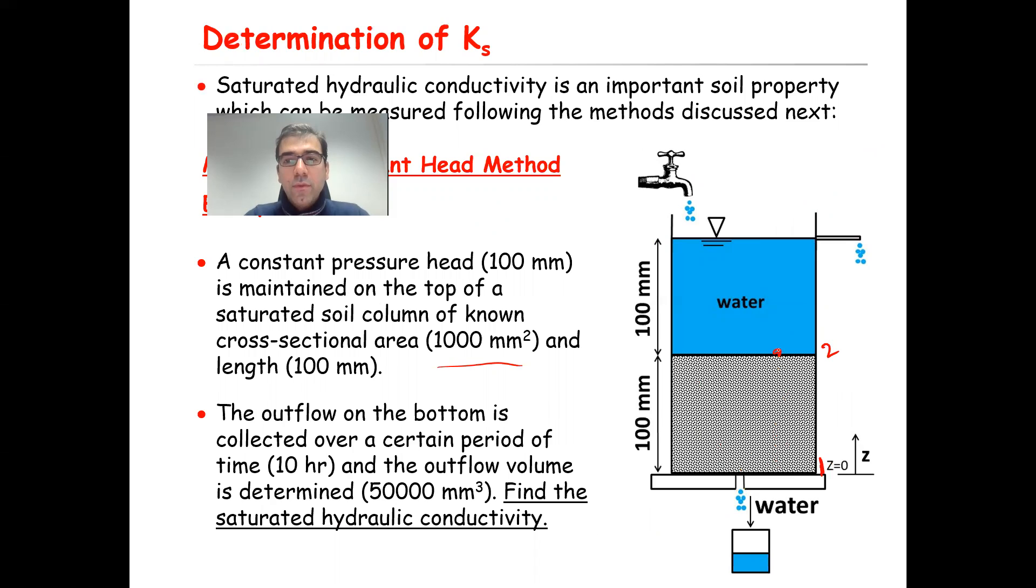The head has two components: gravitational head and hydrostatic pressure. In terms of gravitational head, that is the vertical distance between point of interest and the reference level. In this particular case, that is equal to 100, so that will be 100. H2 will be equal to 100, that is gravitational head, plus hydrostatic pressure. At this point, the hydrostatic pressure, as explained in the previous lecture, is equal to the vertical distance between point of interest and the free water surface. If the free water surface is 100 millimeters above, that will be equal to 200.